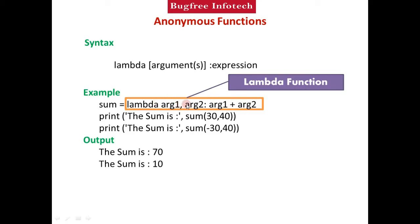After creating the lambda function, it won't execute automatically — we need to write a statement to execute it. We use the print function to display the output. We call 'sum(30, 40)' — this calls the lambda function, passing 30 as arg1 and 40 as arg2.